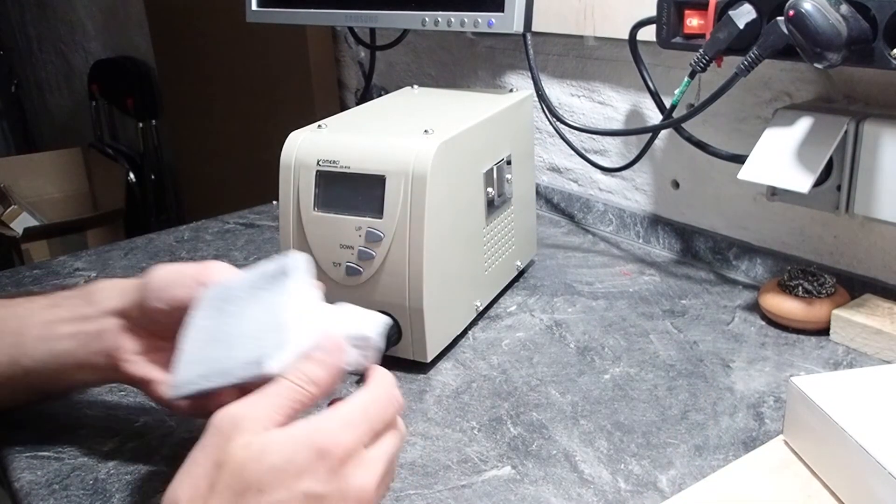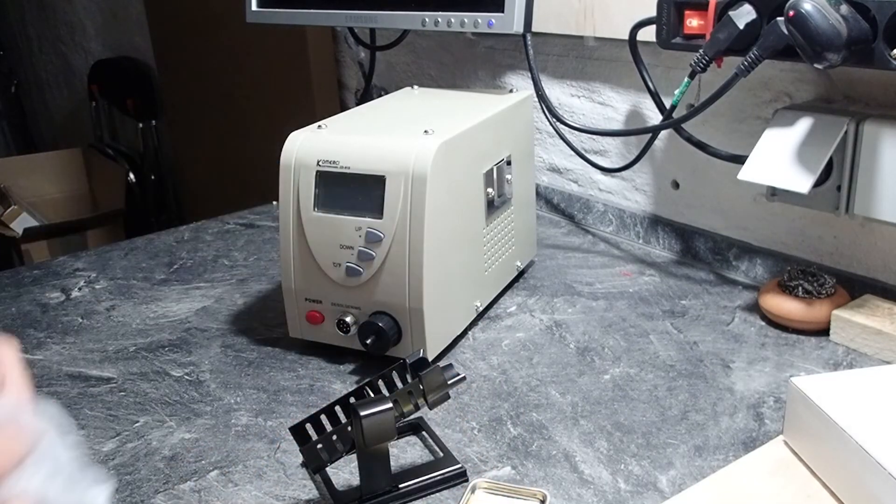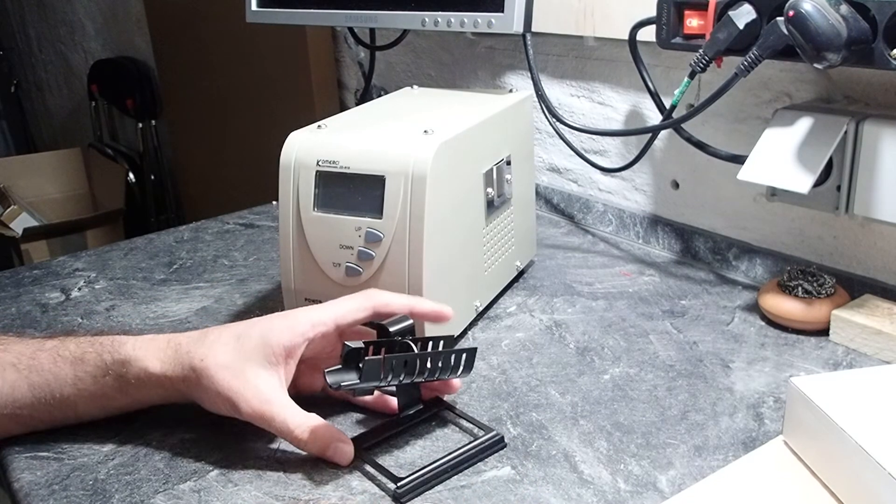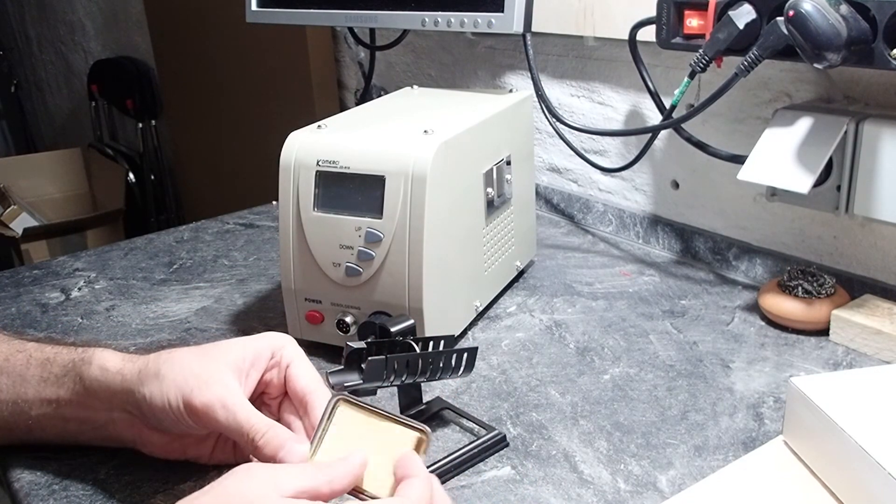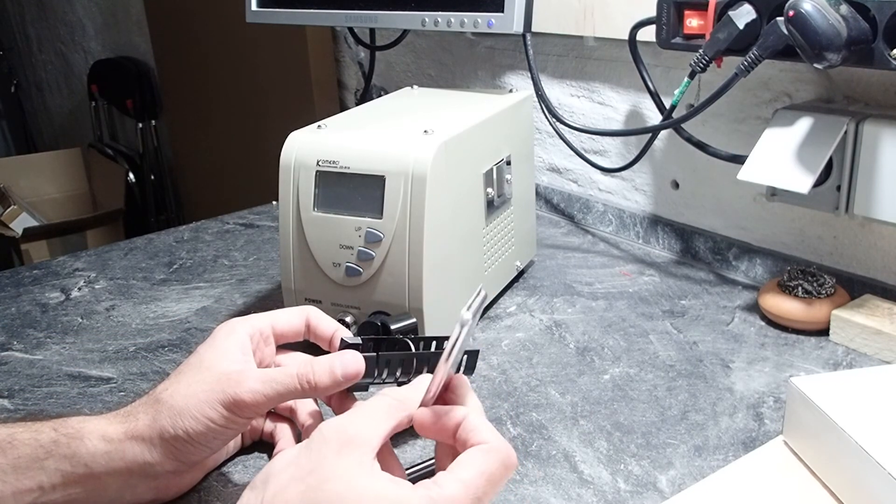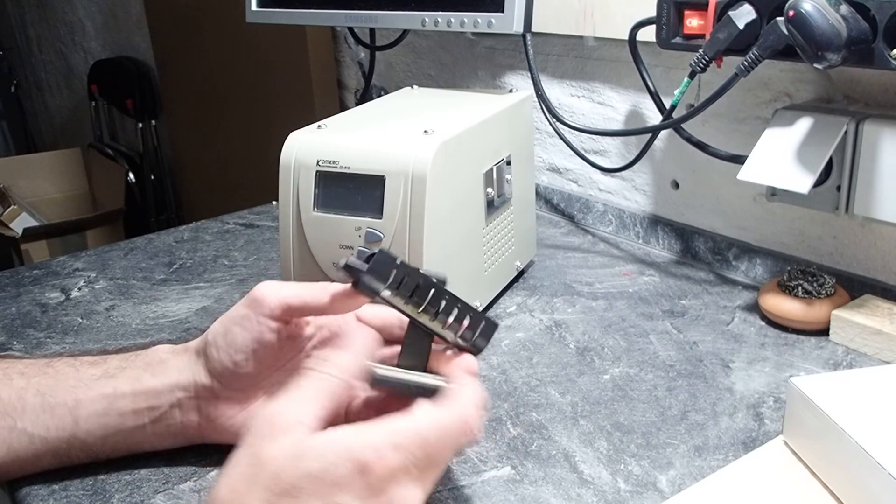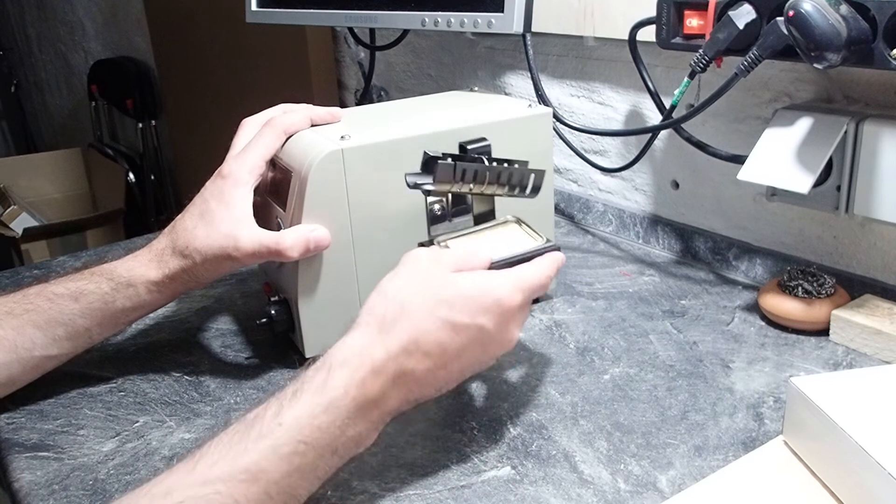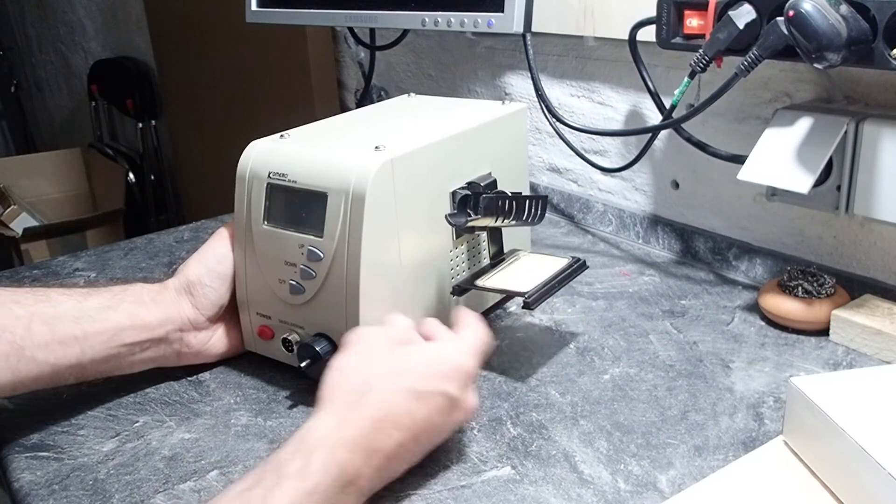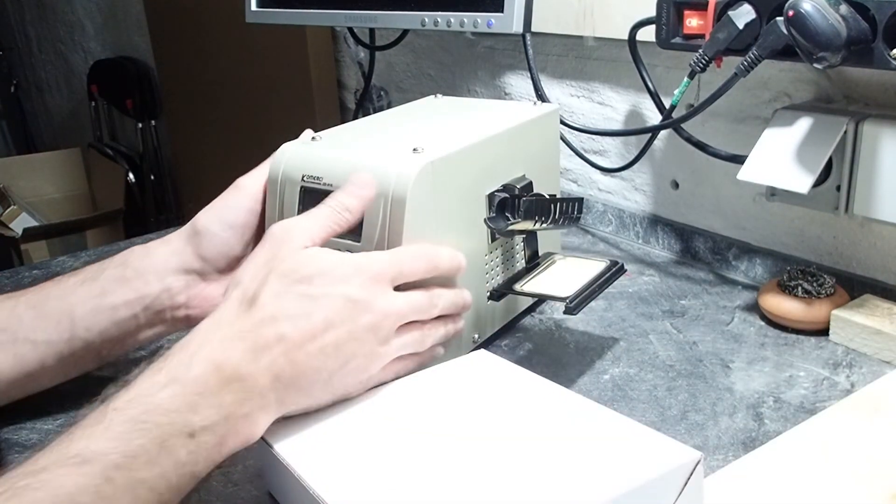Here we have a stand where you can put the desoldering gun into. There is a sponge inside where you can put some water to clean up the nozzle. And the stand goes to the side of the case. So it's quite a well-looking integrated solution. Let's see how it works.